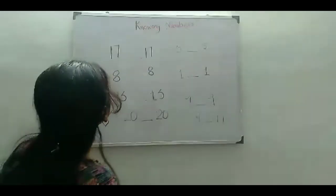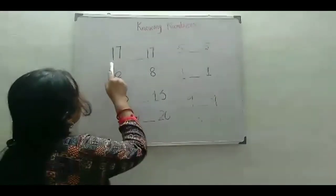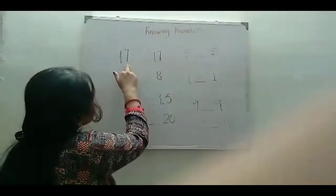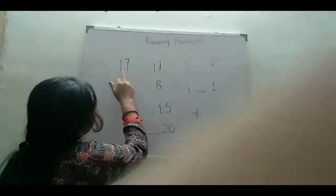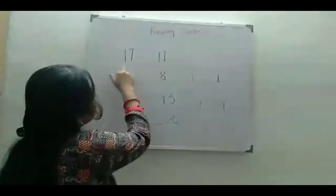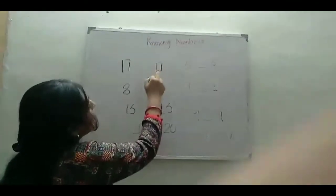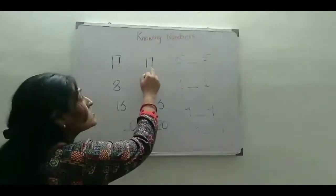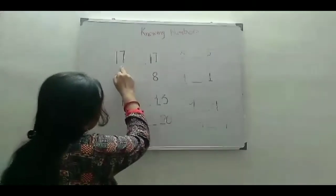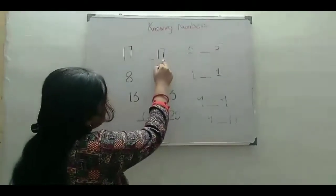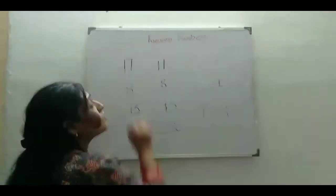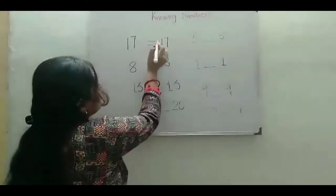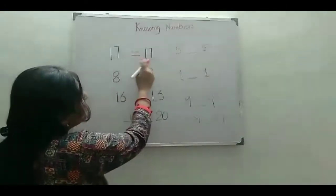Now children, look at the first number: 1 ten and 7 ones. The ones number is 7 and the tens number is 1, so this number is 17. Here also, the ones number is 7 and the tens number is 1, so this is also 17. So, 17 is equal to 17, and the sign should be the equal to sign: 17 equal to 17.